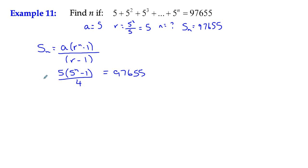What can we do? We can multiply both sides by 4. That gives us 5(5ⁿ - 1) = 97,655 × 4.